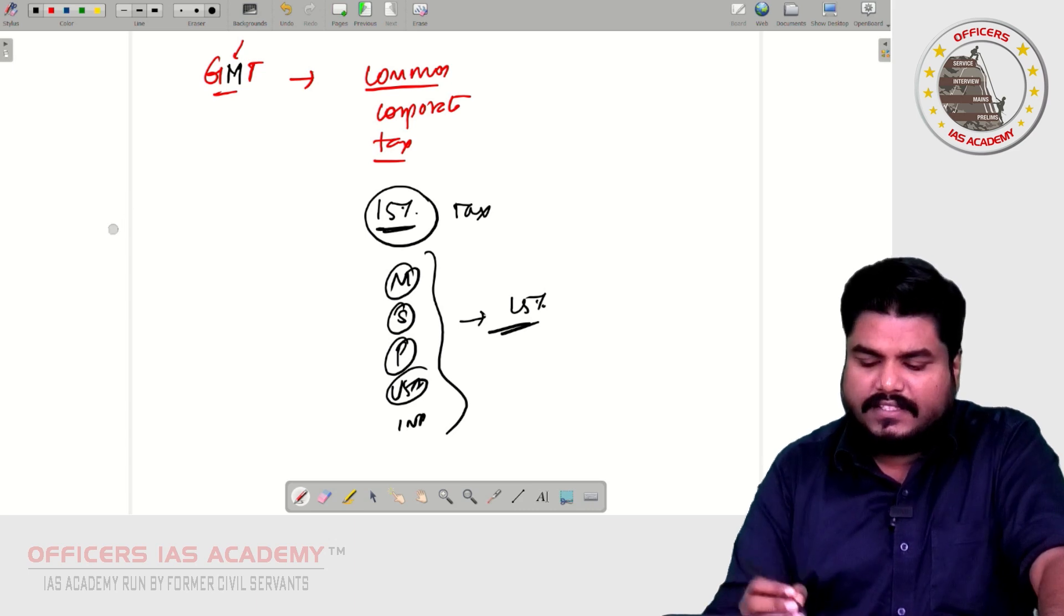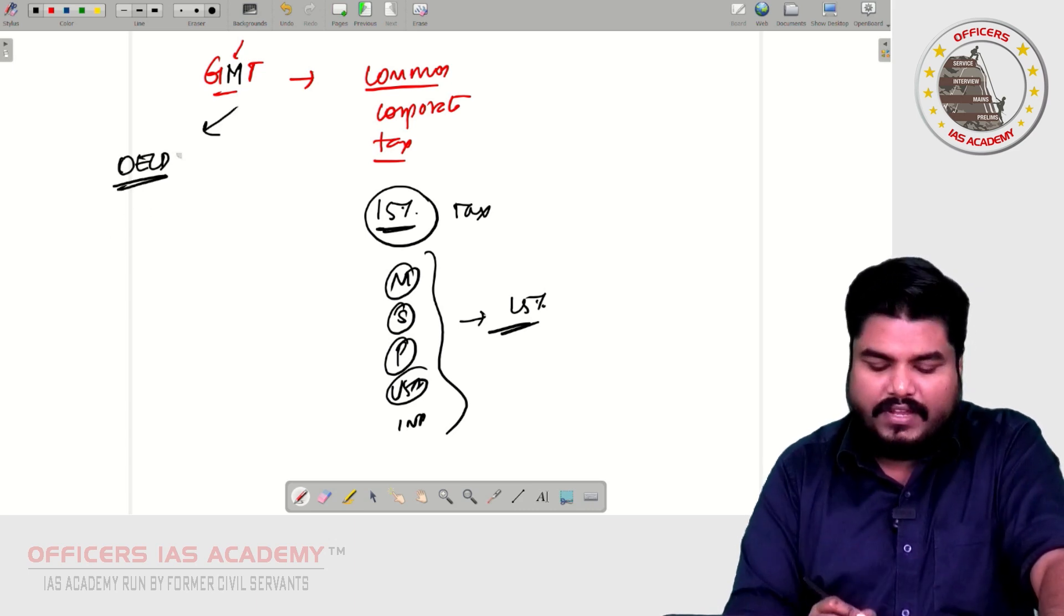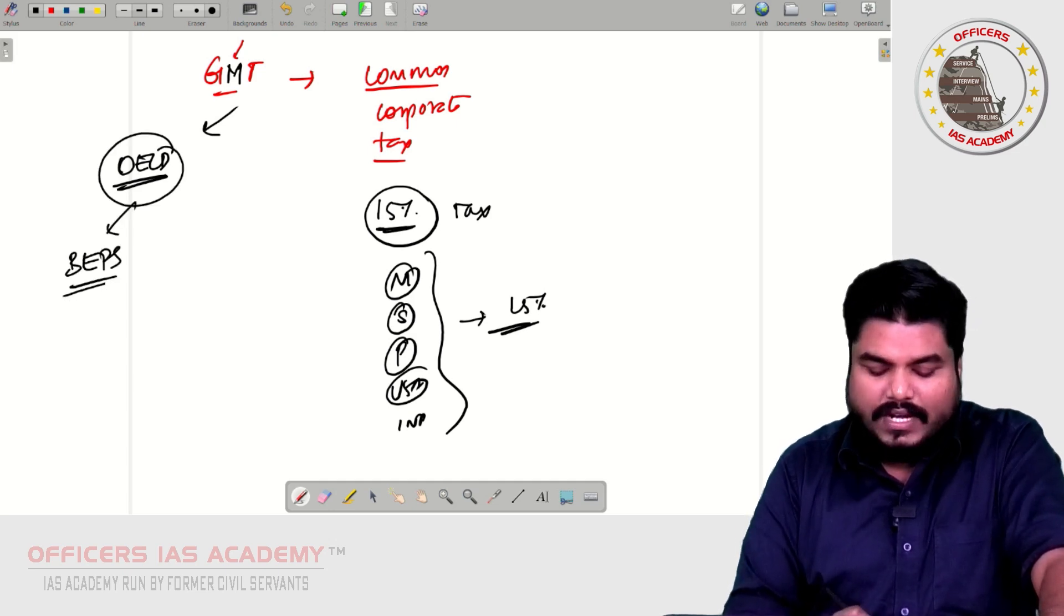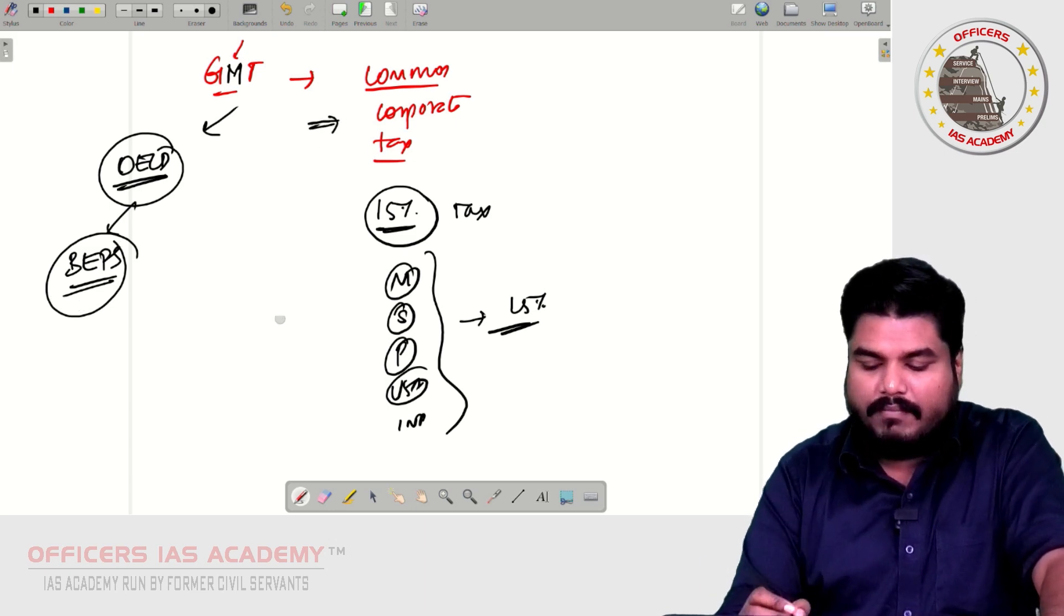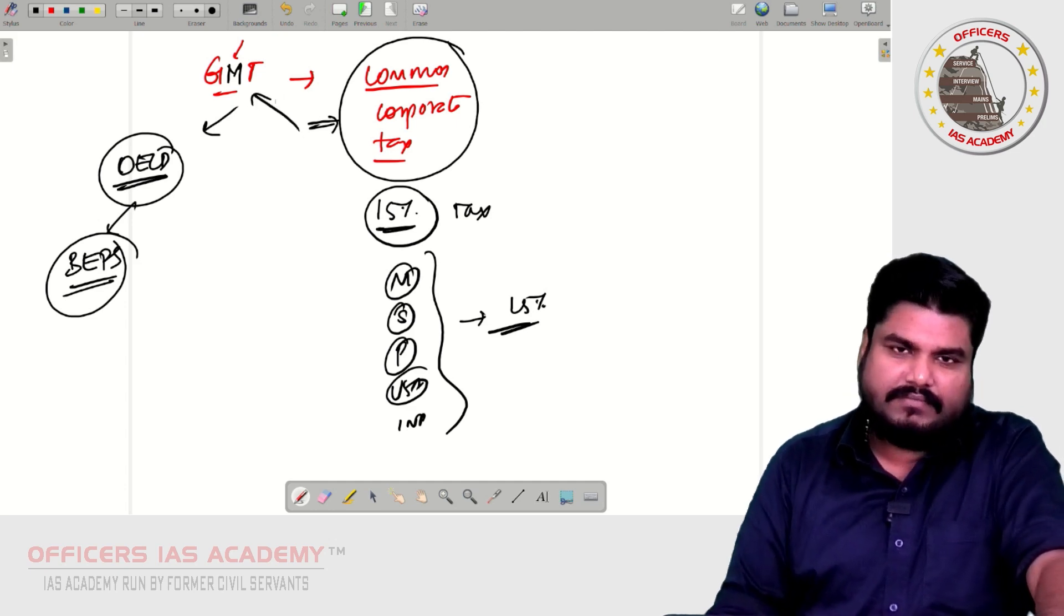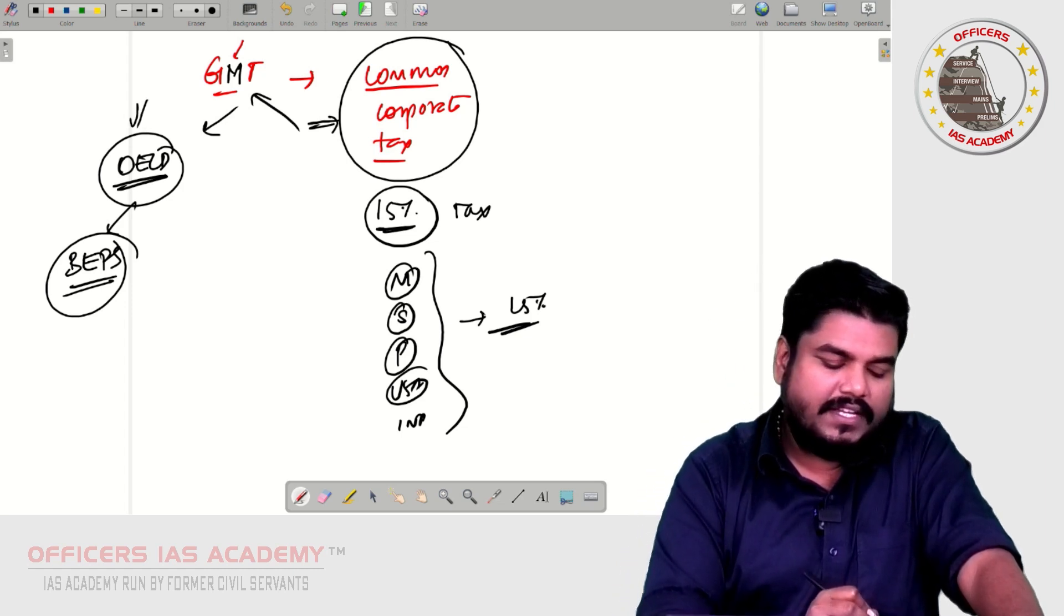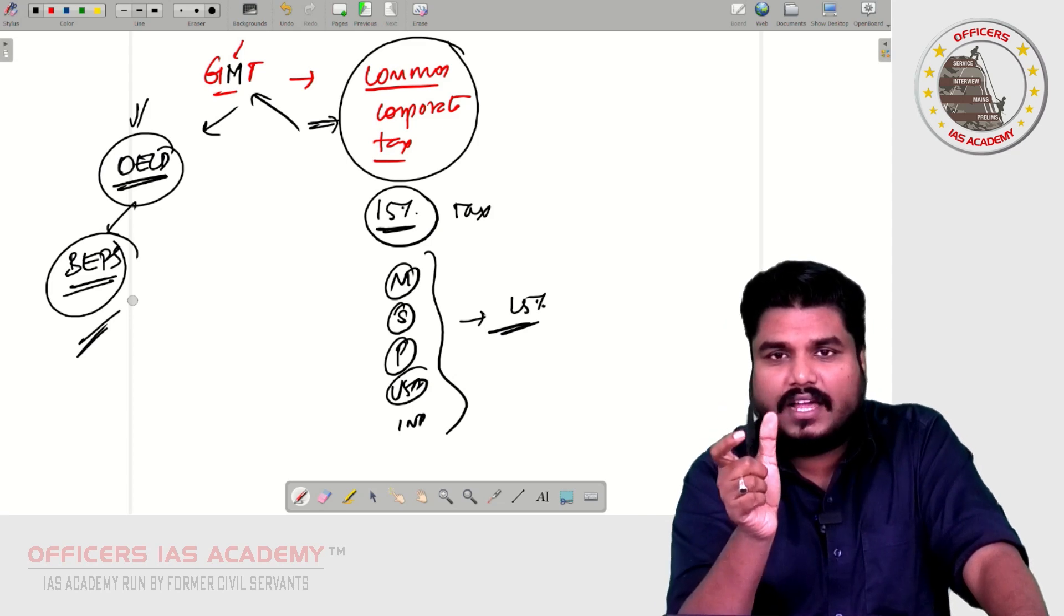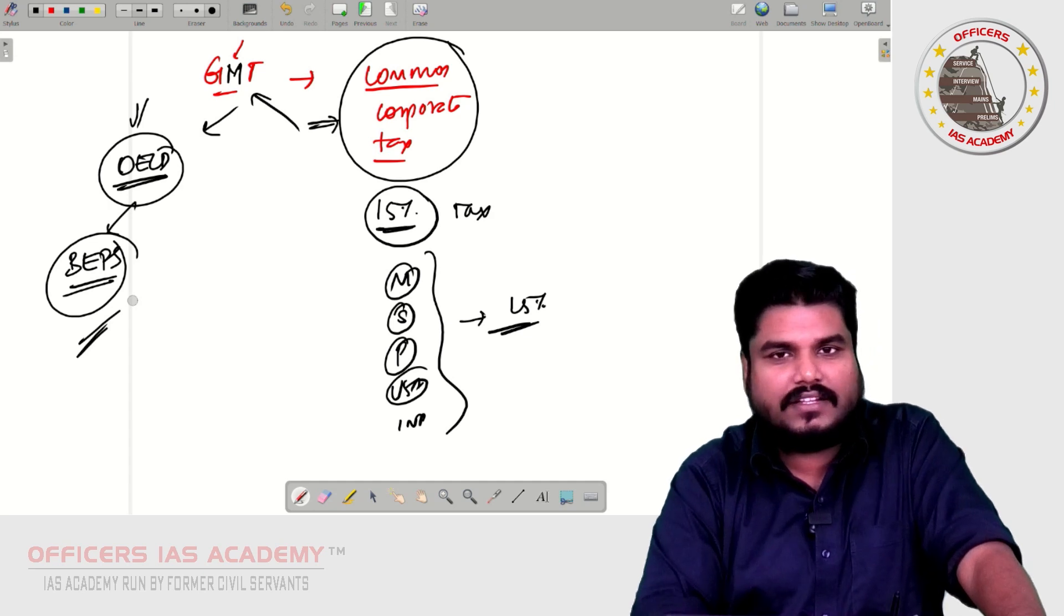This idea is suggested by OECD. So OECD, we saw, they are taking efforts to curb the Base Erosion Profit Shifting. So one such effort taken by OECD is they proposed a minimum corporate tax, common corporate tax, that is the GMT - I mean, Global Minimum Tax - proposed by OECD to tackle this BEPS. Because every country is having some common minimum tax, there will be no incentive to move from one country to another country.